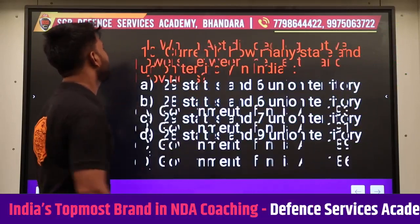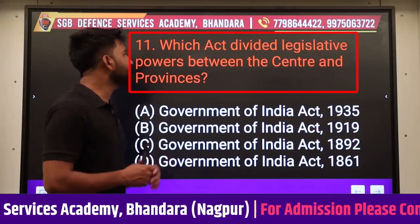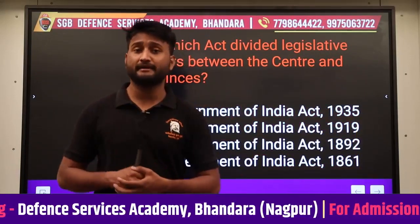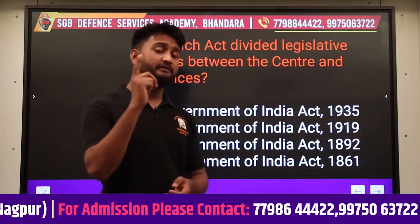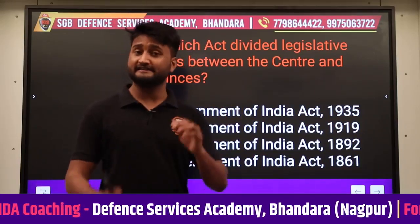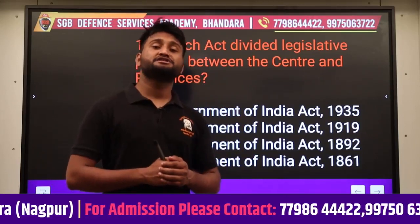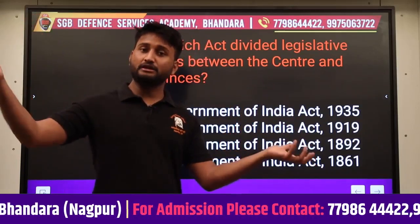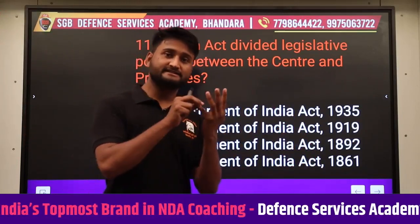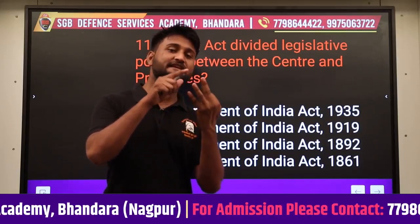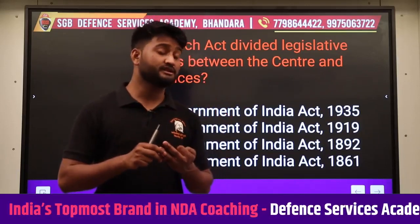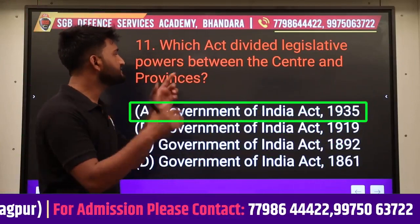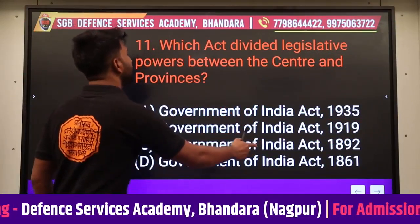Next question: Which act divides legislative powers between the center and province? Government of India Act 1935 में से 200 से भी ज्यादा articles Indian Constitution में copy-paste किए गए थे। यही वो act है जिसमें central authority और state authority के अधिकारों का विभाजन किया गया - central list, provincial list और concurrent list, ऐसी तीन सूचियां बनाई गईं। आज भी Indian Constitution में यह सूचियां हैं। Answer रहेगा Government of India Act 1935।